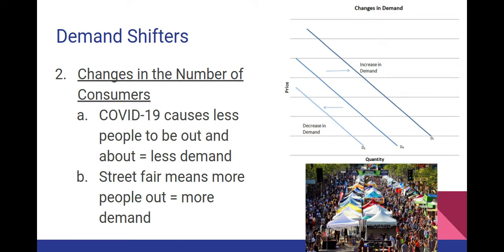The second demand shifter is changes in the number of consumers. We're not talking about a nuclear bomb reducing the world population — we're talking about events or things that can cause fewer consumers to be physically around. With the internet, this is less common of a problem. But right now is actually a perfect example: with what's going on with COVID-19, it is causing fewer people to be out and about, and therefore there is less demand at all sorts of stores.